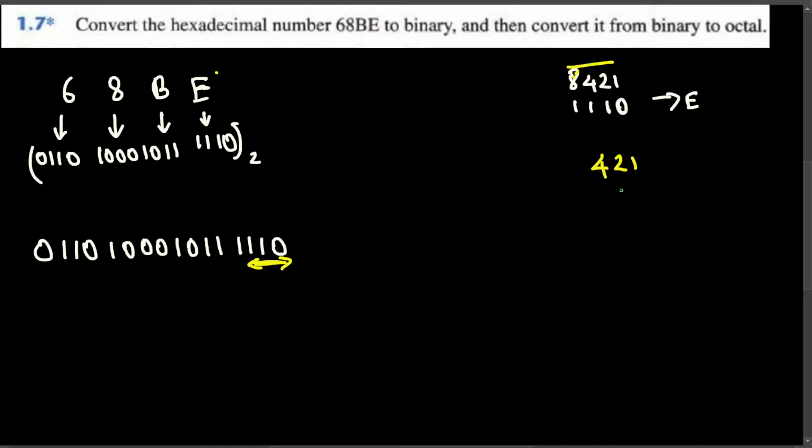And 7 is the maximum number octal can have, so we cannot have anything above that. So 4-2-1 we have to apply for each of these 3 digits. I group them by 3 from right to left.